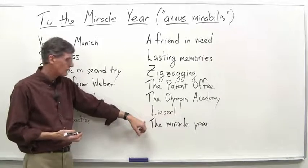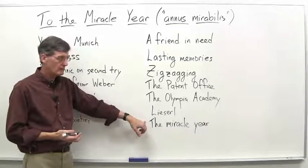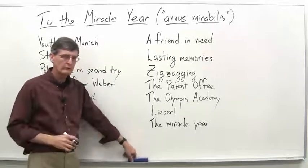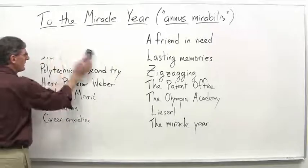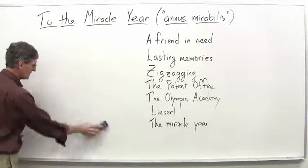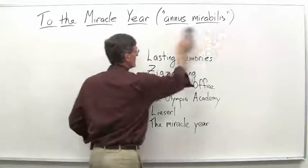And this would be totally unexpected that this would happen. He had been able to publish a few physics papers in German journals, but nothing extraordinary. So let's just take a look at the miracle year itself and talk about, briefly, the five papers that he published in the miracle year.